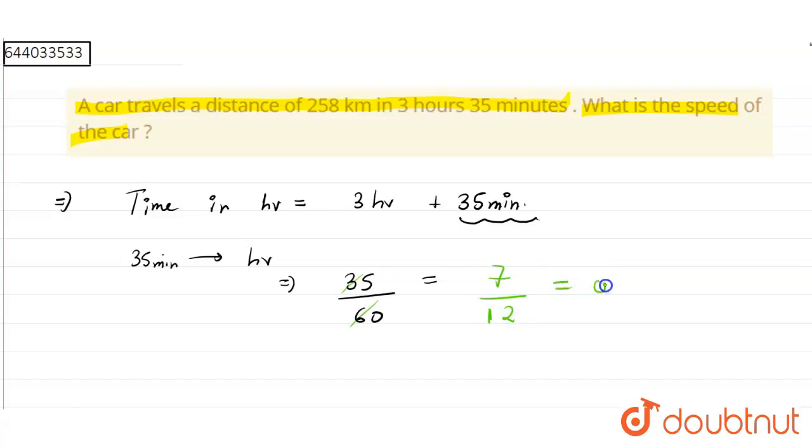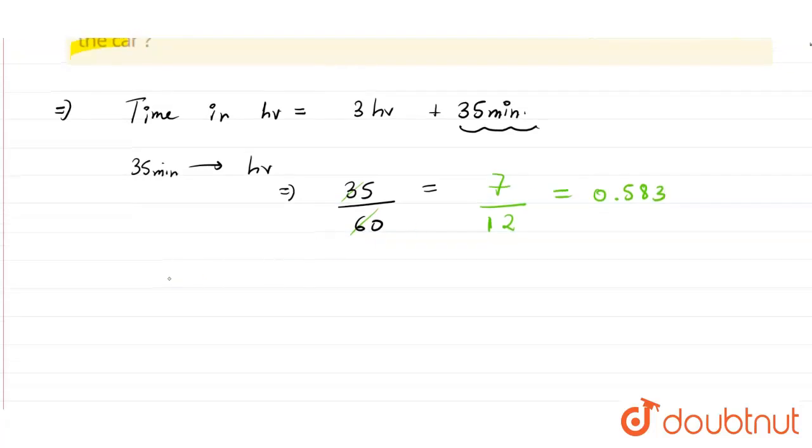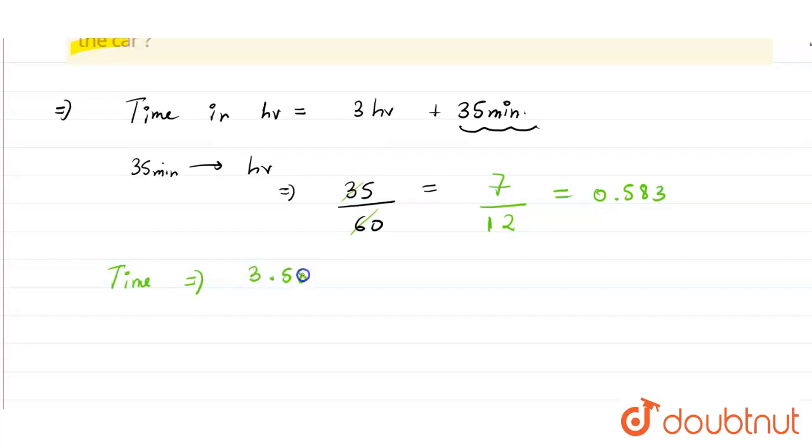This is equal to 0.583. So the time in hours will be, time will be equal to 3.583 hours. Now the speed...